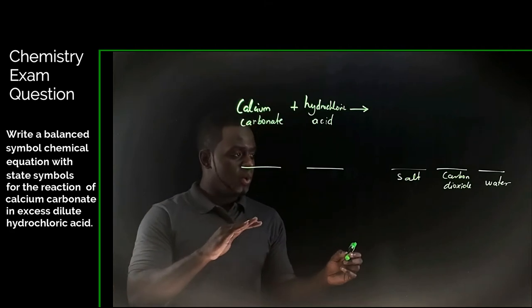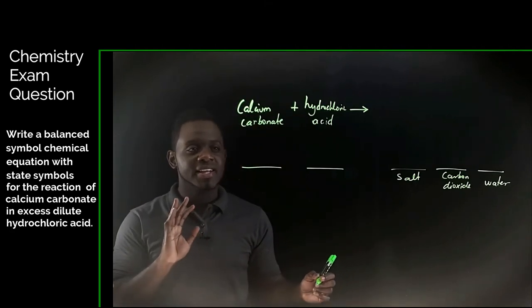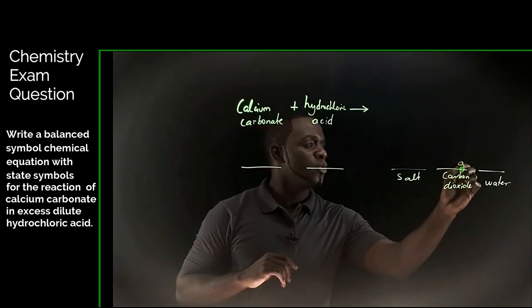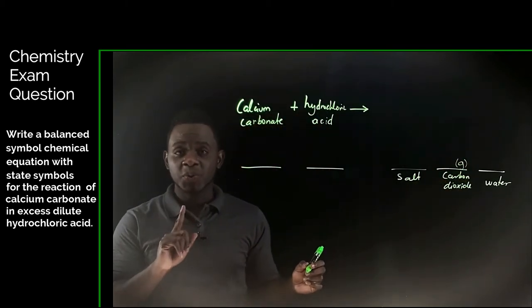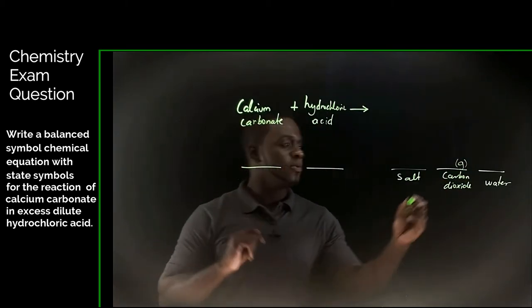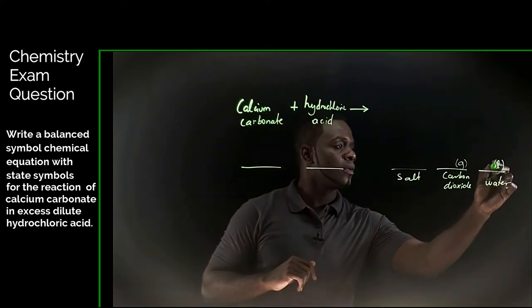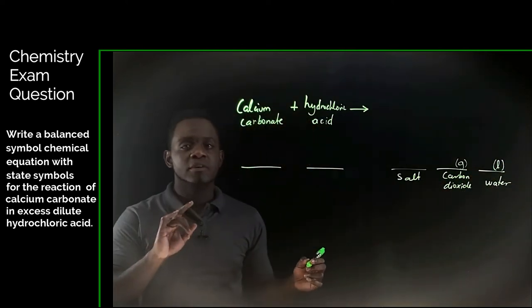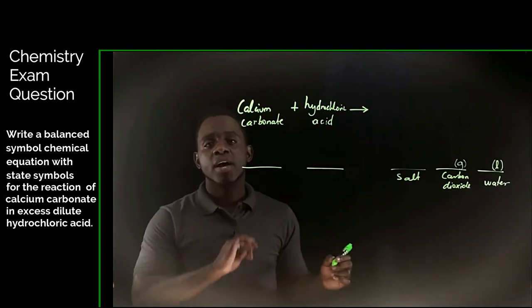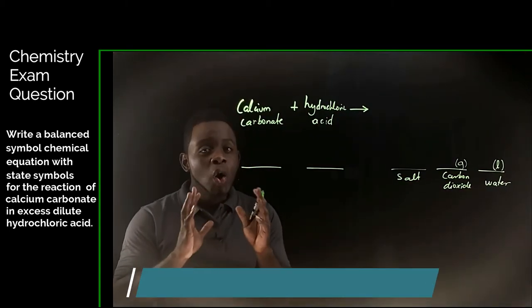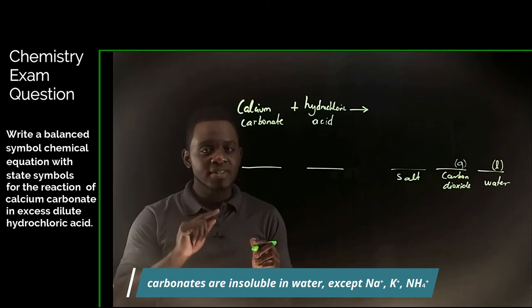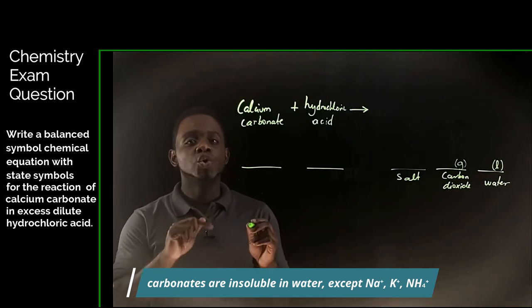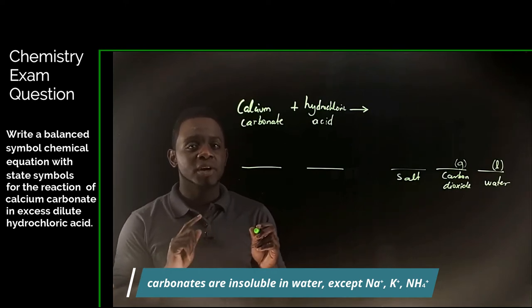We know that carbon dioxide is a gas, so we use G for that symbol there. We also know that water is liquid. From the theory of the solubility of carbonates, we know that all carbonates are insoluble except when those carbonates are bonded to a group one metal or the ammonium ion.